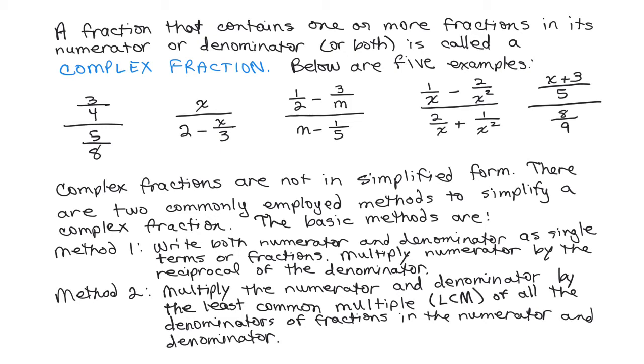Complex fractions are not in simplified form. There are two commonly employed methods to simplify a complex fraction. The first method is to write both the numerator and denominator as single terms or fractions and then multiply the numerator by the reciprocal of the denominator. The only example where you already have the numerator and denominator written as a single term or fraction is the very first one. We have just a single fraction in the numerator, three-fourths, and a single fraction in the denominator, five-eighths.